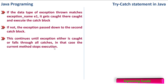If no catch block matches, the current method stops execution. We handle exceptions to prevent the entire program from reaching a halt or stop state. If we handle the exception successfully, the program will continue after the try catch block. This will get more clear when we see an example.